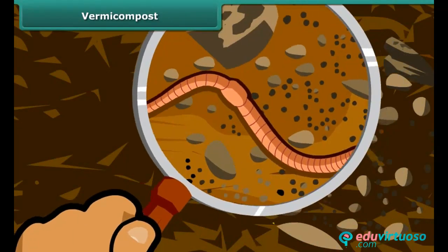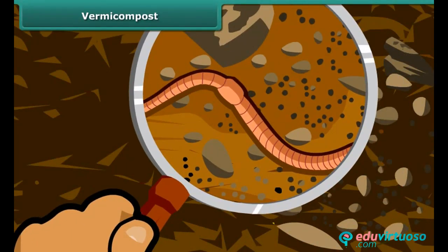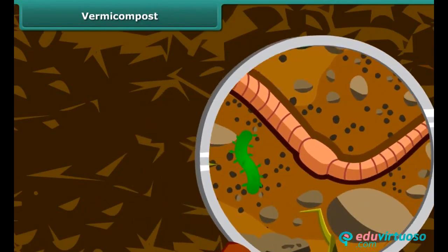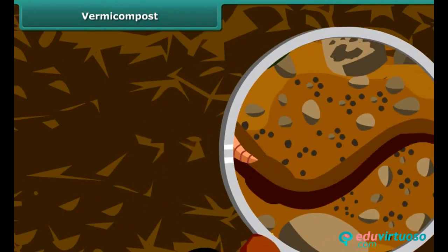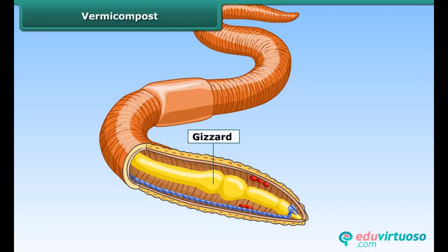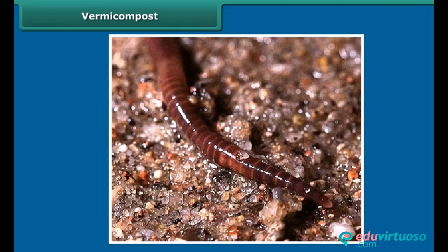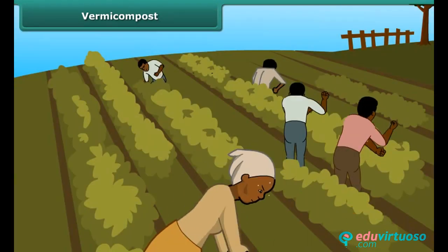You might have seen earthworms in the rainy season — they convert kitchen waste into compost. This is known as vermicomposting. The red worms used in vermicomposting do not have teeth; a special structure called a gizzard is present in them, which crushes down the food. These worms cannot live in hot or cold environments, therefore moisture is required in the formation of vermicompost. The compost obtained from vermicomposting is used in agriculture.